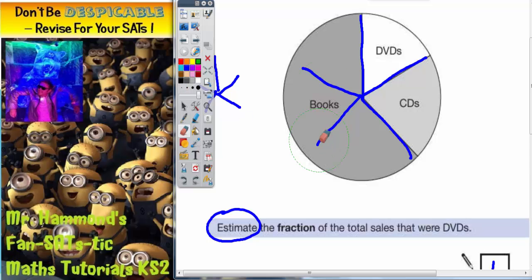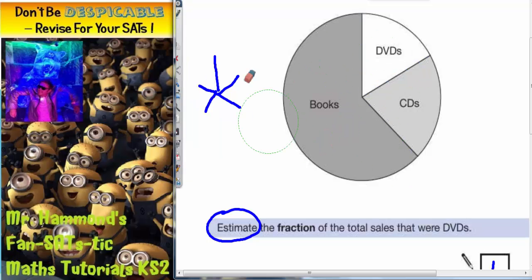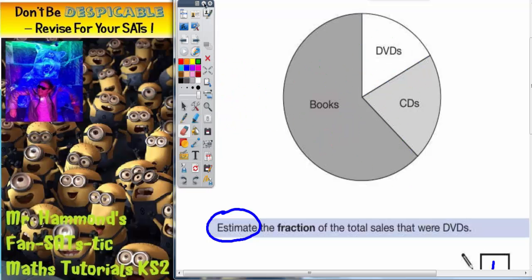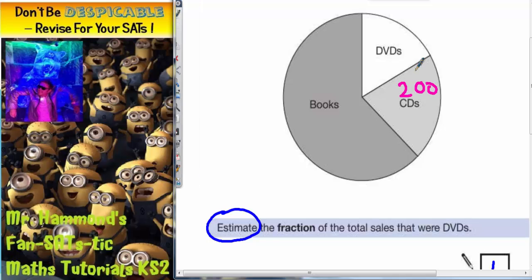Let's rub out all those markings so we've got a bit of extra space to play with. Now, CDs is 200. And that is this size of the pie chart. So what I need to do is I need to work out how many sections of roughly that size will I be able to fit in the book section.